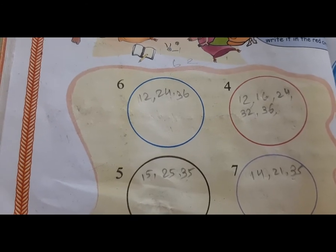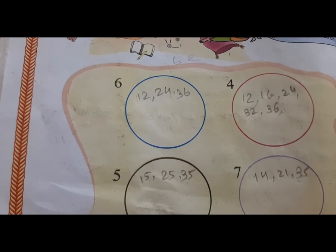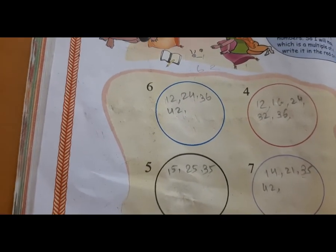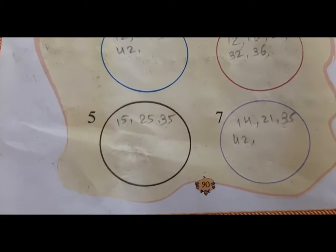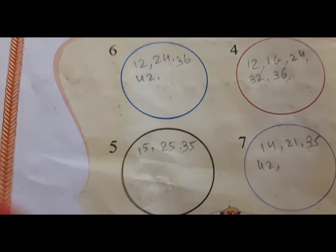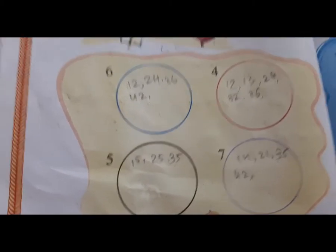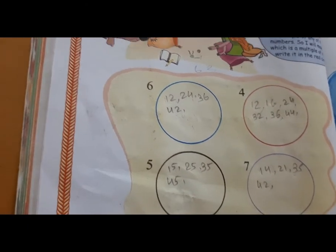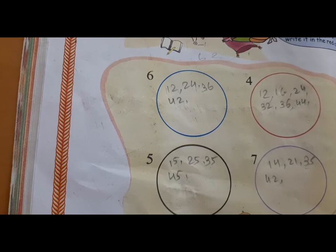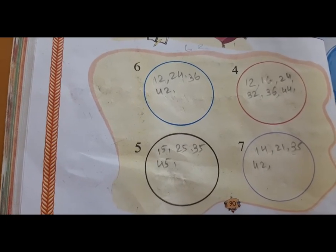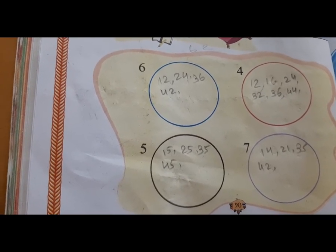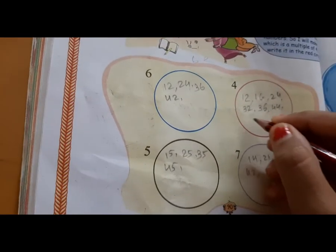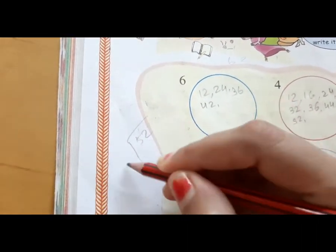36 is a multiple of 4 and also of 6 — 6 sixes are 36. 37 is not a multiple of any. Then 41, 41 is not a multiple of any. 42 is a multiple of 6 and 7 — 6 times 7 is 42. 4 is not a factor of 42. 43 is not a multiple of any. 44 is a multiple of 4 — 11 times 4 is 44. 45 is a multiple of 5. 46 is not a multiple of any.